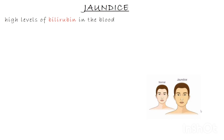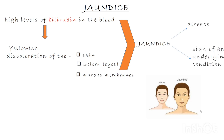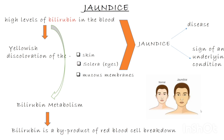Jaundice. Because of high levels of bilirubin in the blood, there will be yellowish discoloration of the skin, sclera, and mucous membrane, which results in a condition called jaundice. It can manifest as a single disease or as a sign of an underlying condition. Bilirubin is a byproduct of red blood cell breakdown.